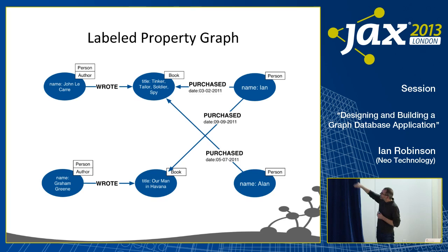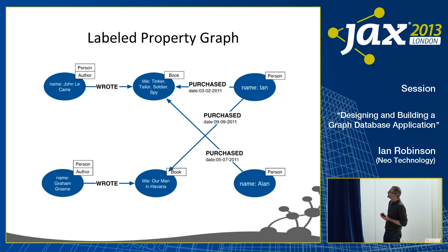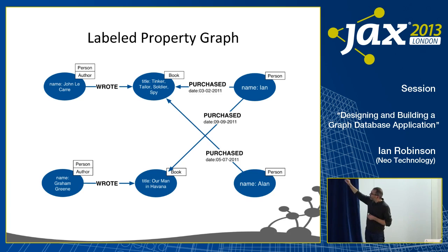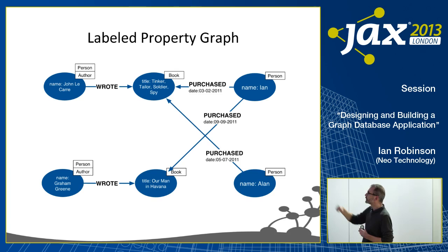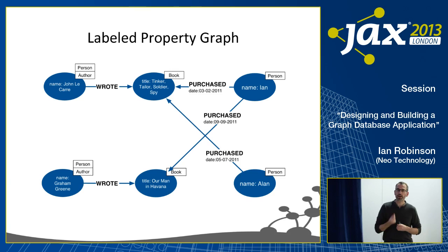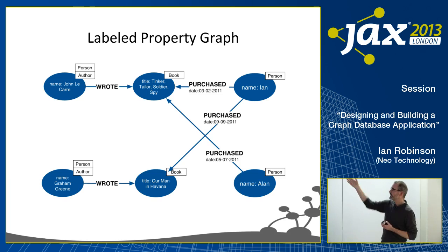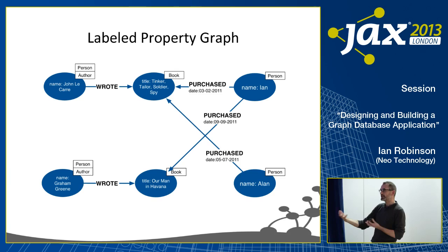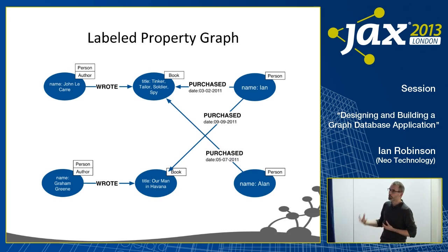Nodes can have properties attached to them, but we can also attach properties to relationships. For example, the purchase relationships here have an attached timestamp property indicating the date when Ian purchased a book. Whereas we use properties on nodes to represent the attributes of entities, we tend to use properties on relationships to model the strength, quality, or weight of that relationship, or to attach metadata. If we were modeling a transport network, we'd attach properties to relationships to specify the distance or duration involved in traveling from one node to another, and then do a shortest weighted path traversal.